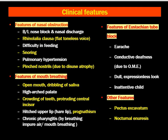Let's now cover the clinical features of adenoid facies and adenoids. Due to nasal obstruction, features include bilateral nasal block and nasal discharge, rhinolalia clausa — that is, a flat-toned voice equivalent to speaking with the nose closed — and difficulty in feeding. The child cannot breathe through the nose and must breathe through the mouth. There may also be snoring or sleep apnea-like syndrome, pulmonary hypertension when obstructive sleep apnea syndrome develops, and pinched nostrils due to disuse atrophy since the person uses the mouth for breathing.